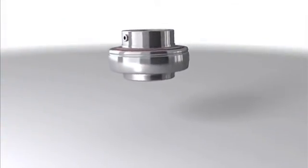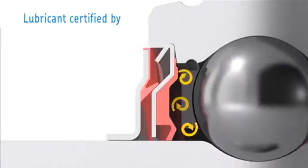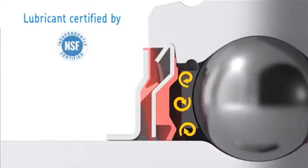The SKF wash-down seal prevents the washing liquid and any process material from entering the bearing, and prevents the lubricant from leaking out.